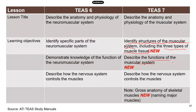Next, describe how the nervous system controls the muscles. This is a topic that was also in TEAS 6, so that's not new. And this is not in the learning objectives, but I think it's a pretty big change for the muscular system, and it definitely adds more material you need to study. This new topic is about the gross anatomy of skeletal muscles — basically you need to know the major muscles, their names, and where they're located.